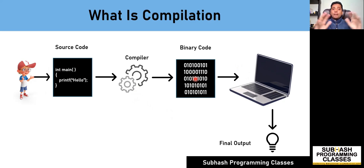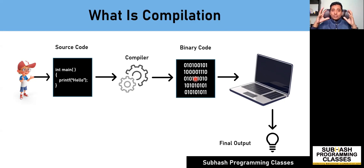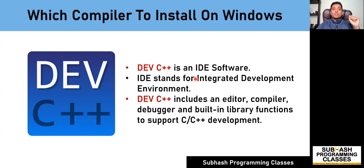Having understood what compilation means, let us now go ahead and write, compile and run our C program on a Windows machine. Before writing and compiling our C source code on Windows, we'll have to first install a software called Dev C++.